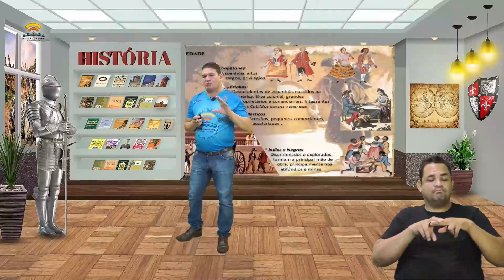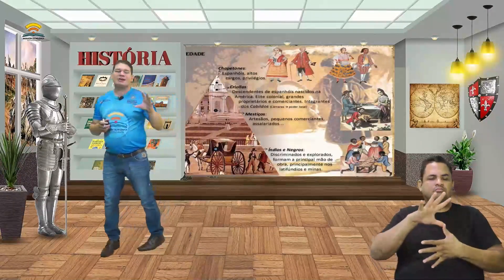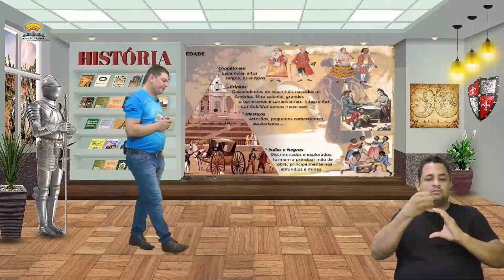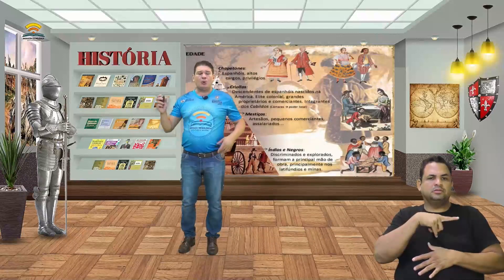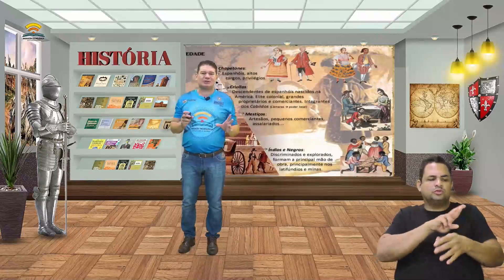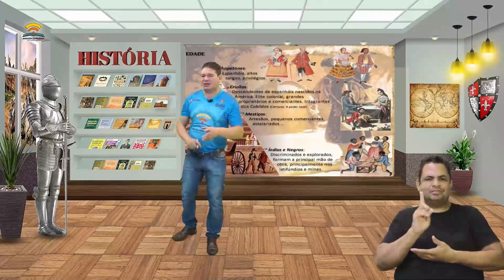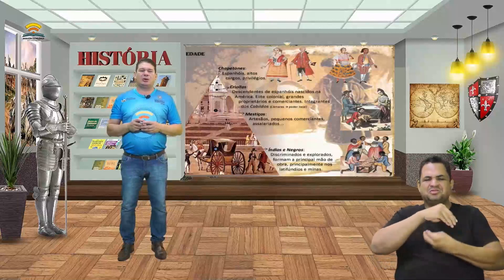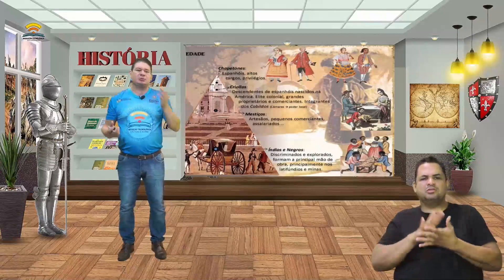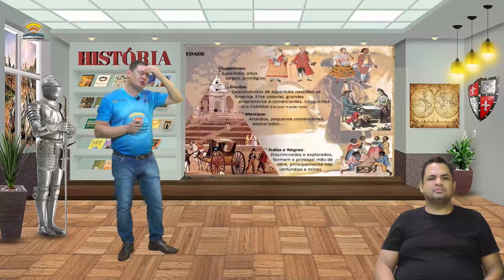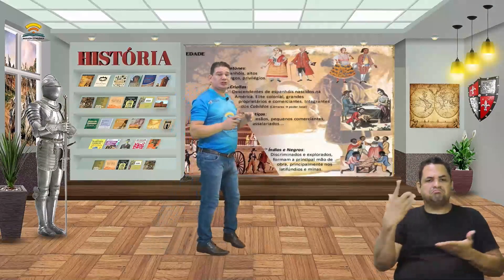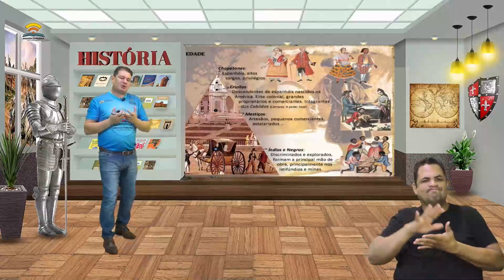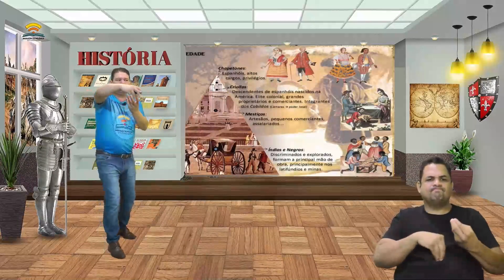Na América Espanhola, nós vamos ter pouca mistura de raças, pouca miscigenação. Já no Brasil, você vê que é altamente miscigenado: branco, índio, negro, oriental. Os espanhóis desestimulavam essa mistura de raças para evitar esse processo de miscigenação.